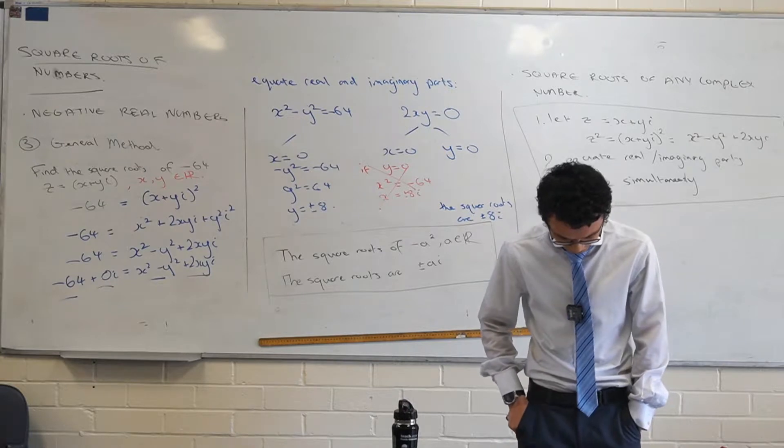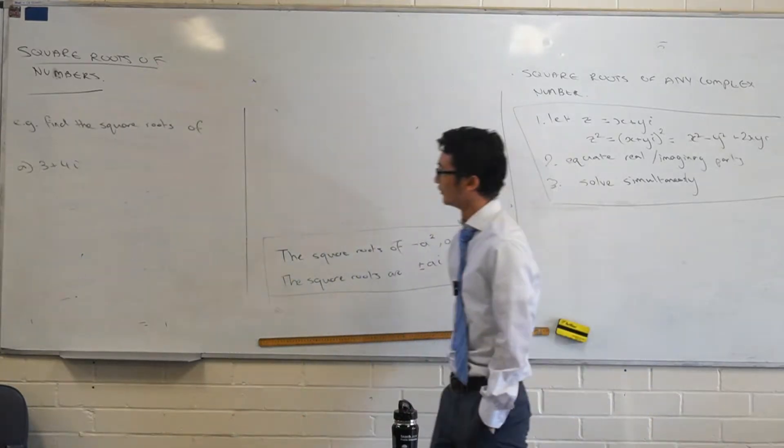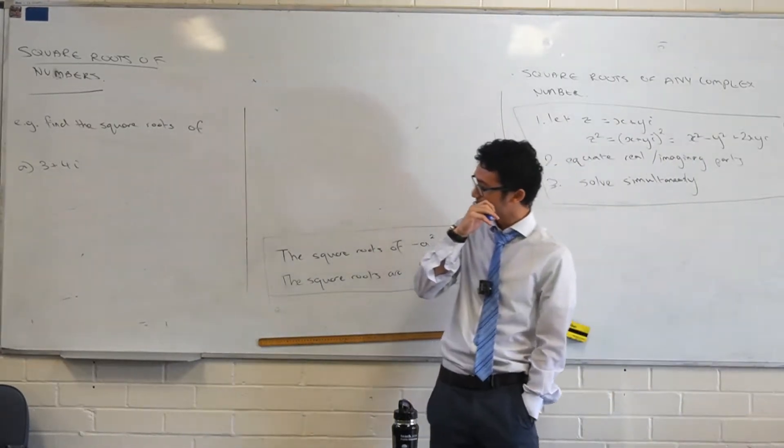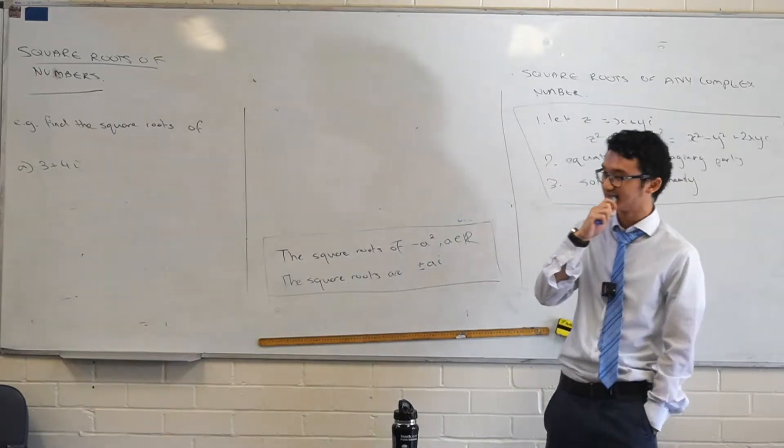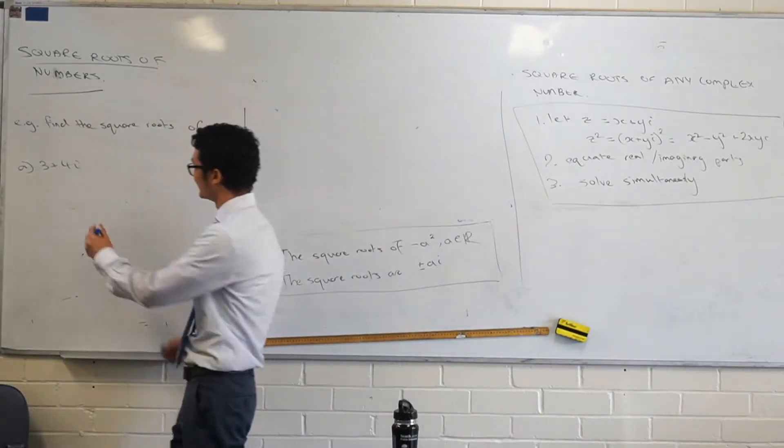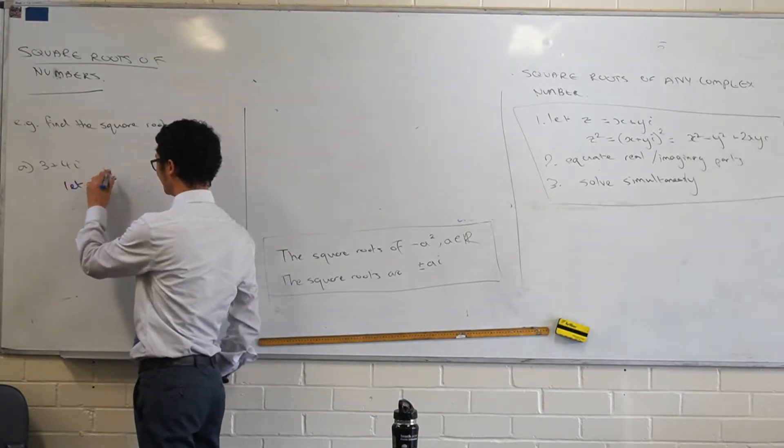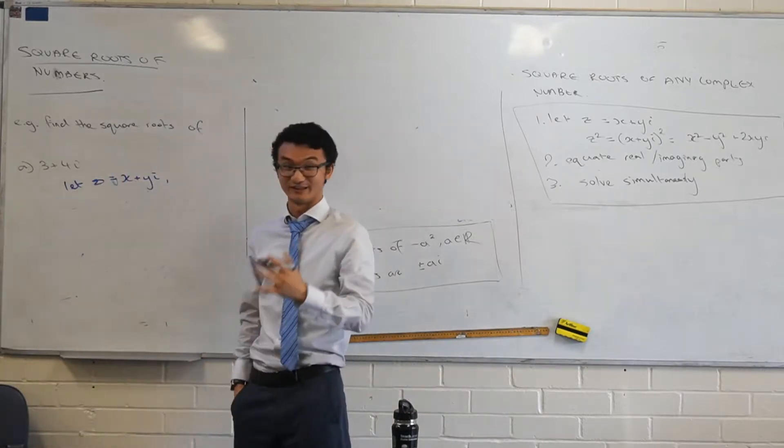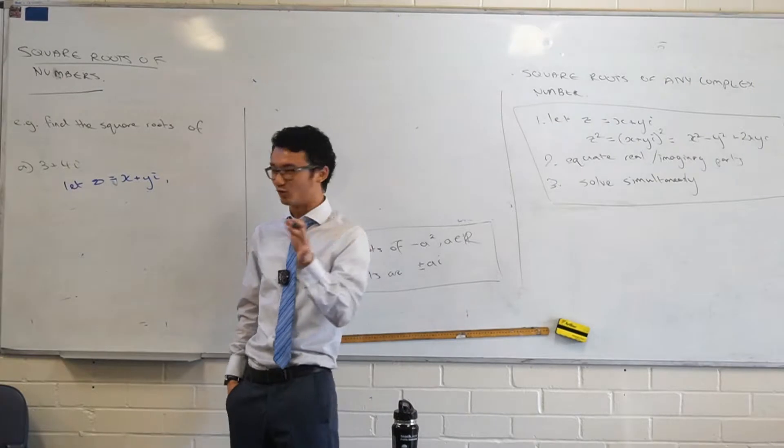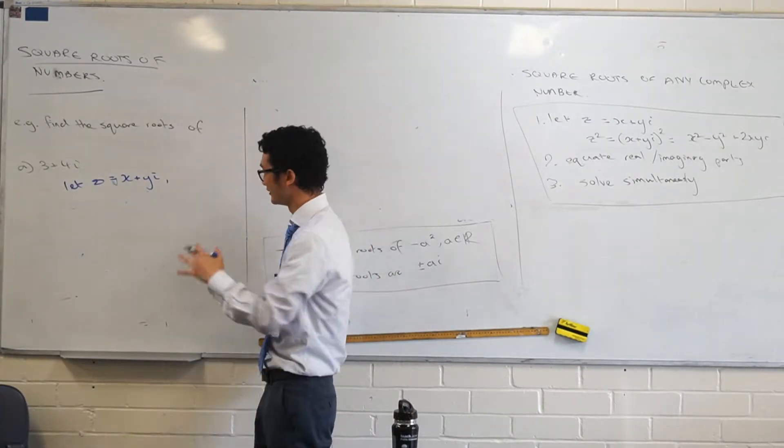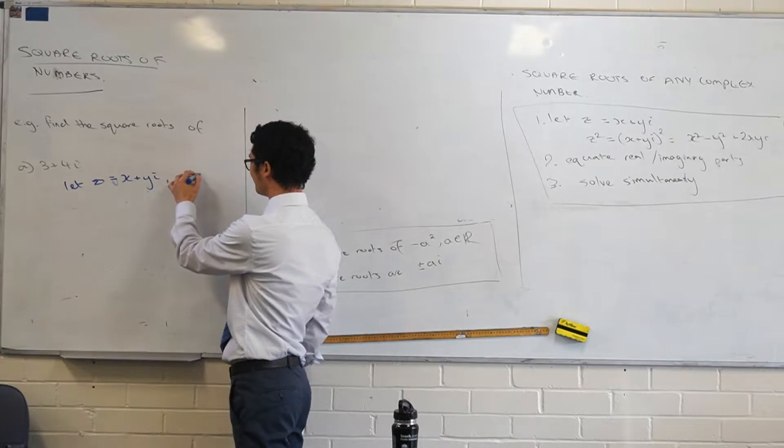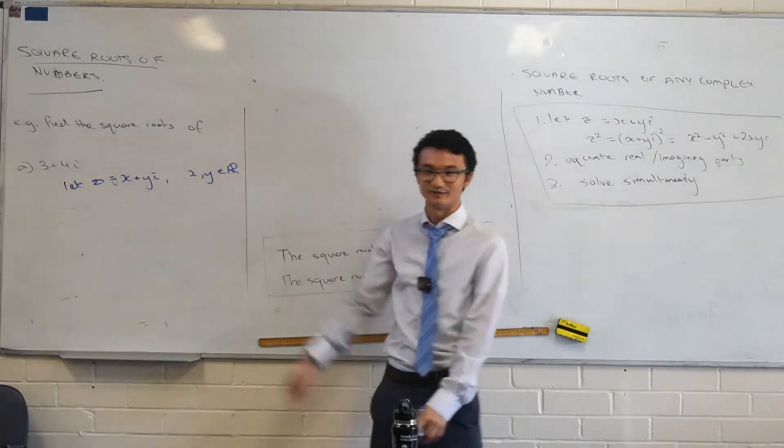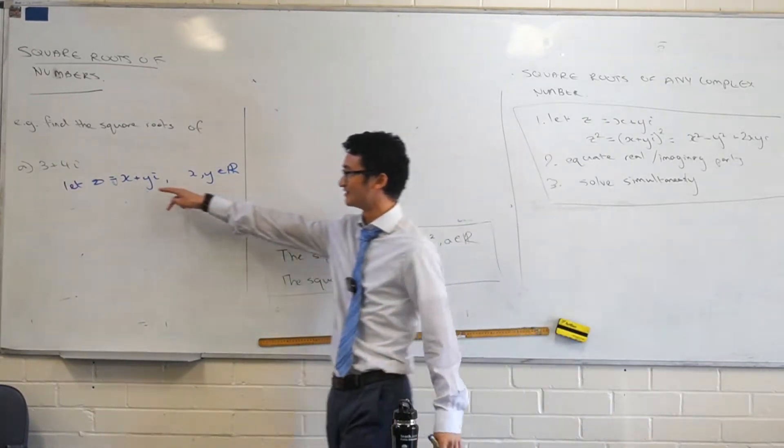This third step here is going to vary depending on the question you get. We're not actually testing whether you can solve simultaneously. That's just a skill that we use. But there are various tricks and things that are going to make this quicker, depending on the question that we get. But let's do an example first. Let's do the one that's there. Find the square roots of 3 plus 4i. How do we kick this guy off? What are we going to do first?